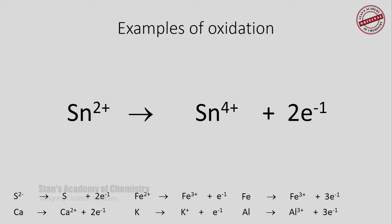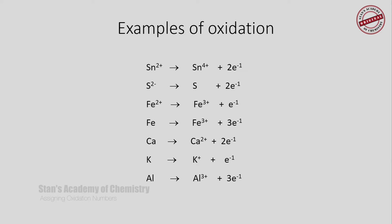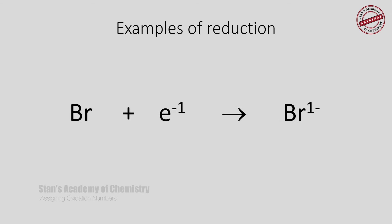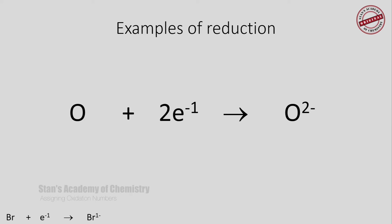Now let's look at some examples of reduction. Bromine belongs to group 17 in the periodic table. It is an electronegative element with a tendency for gaining electrons. So, the neutral bromine atom gains an electron and changes into a bromide ion. The oxidation number changes from 0 to -1 — there is a decrease in oxidation number, hence the process is reduction. Oxygen, belonging to group 16, has a valency of -2. Therefore, a neutral atom of oxygen gains 2 electrons and forms an oxide ion. The oxidation number changes from 0 to -2, hence the process is reduction.